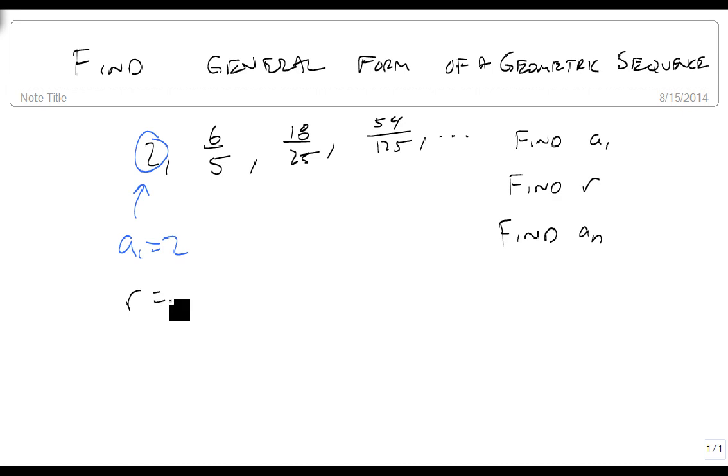R can be found by dividing A2 by A1, which is 6/5 divided by 2, which is 6/5 times 1/2, which equals 3/5.